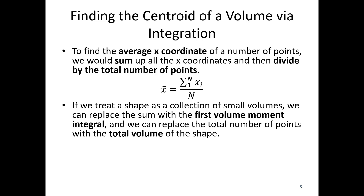We're going to do something similar to find x-bar for an overall volume. If we treat the shape as a collection of small volumes, we can replace the sum on the top with the first volume moment integral. It integrates all of those small volumes, and we replace the total number of points with the total volume of the shape. We integrate all the x coordinates across the entire volume and divide by the total volume on the bottom.